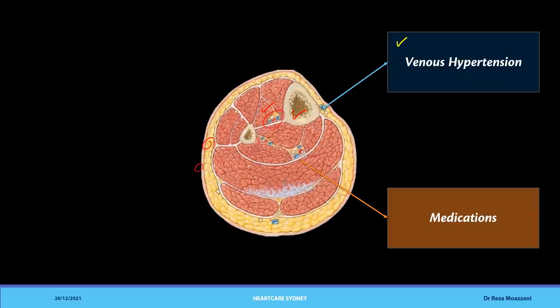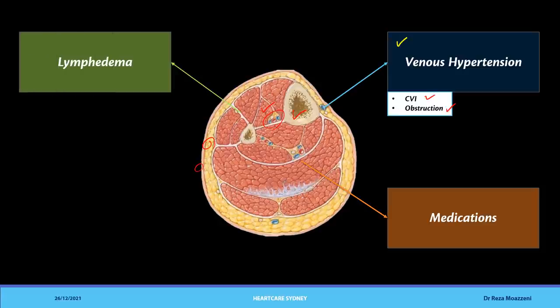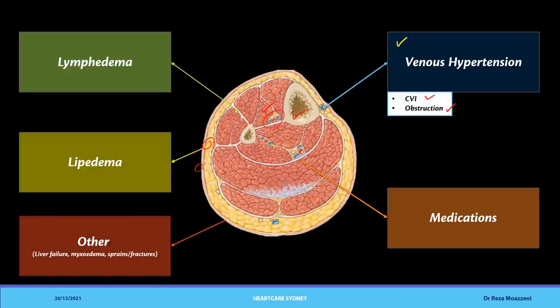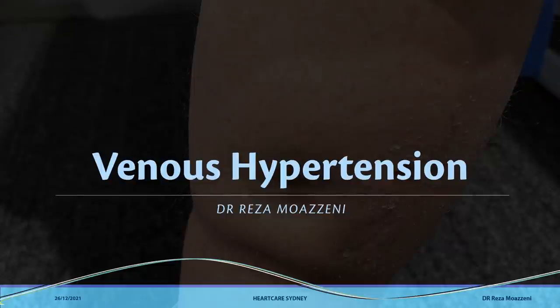Venous hypertension alone is one of the most important contributors, encompassing chronic venous insufficiency and obstruction, and will be the subject of this specific video. The other sections are lymphedema, which involves obstruction of lymphatic flow causing accumulation in the interstitium, and lipedema, which is excessive and abnormal accumulation of fat cells in various sites. We can also include liver failure, severe hypothyroidism, mixed edema, sprains, and bone fractures — though these causes can be quite self-explanatory.